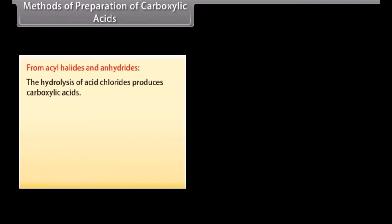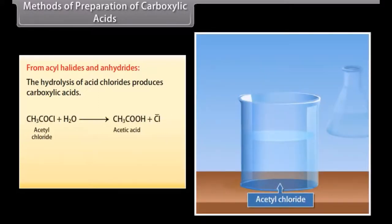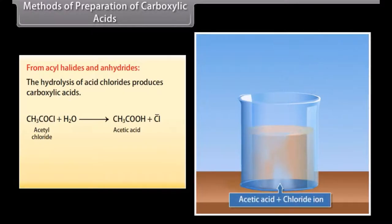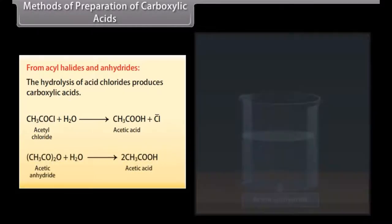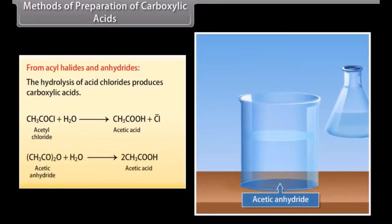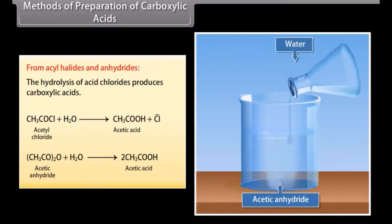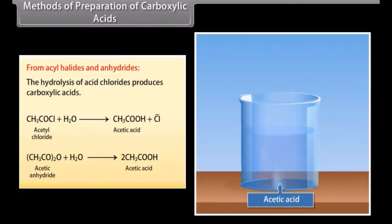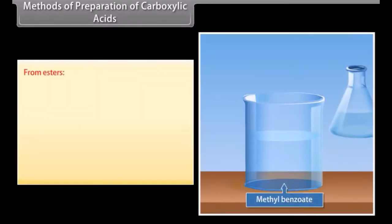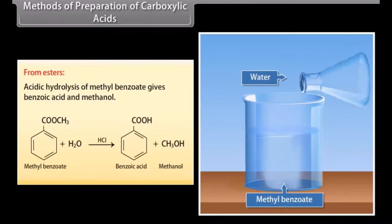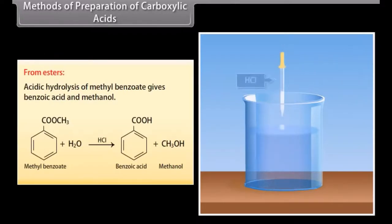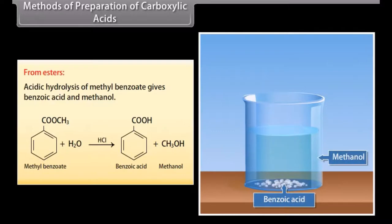The hydrolysis of acid chlorides produces carboxylic acids. On hydrolysis of acetyl chloride, it produces acetic acid. The hydrolysis of acetic anhydride also produces acetic acid. From esters: Acidic hydrolysis of methyl benzoate gives benzoic acid and methanol.